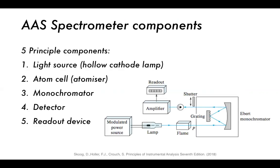There are five principal components in an AAS spectrometer. First, there is some sort of light source — usually a modulated light source attached to a lamp. This modulated power source provides enough energy to the lamp to produce light. The beam then passes through the flame with a known path length, usually around 10 centimeters, and then through a monochromator such as the Ebert monochromator, which includes collimating mirrors and gratings.